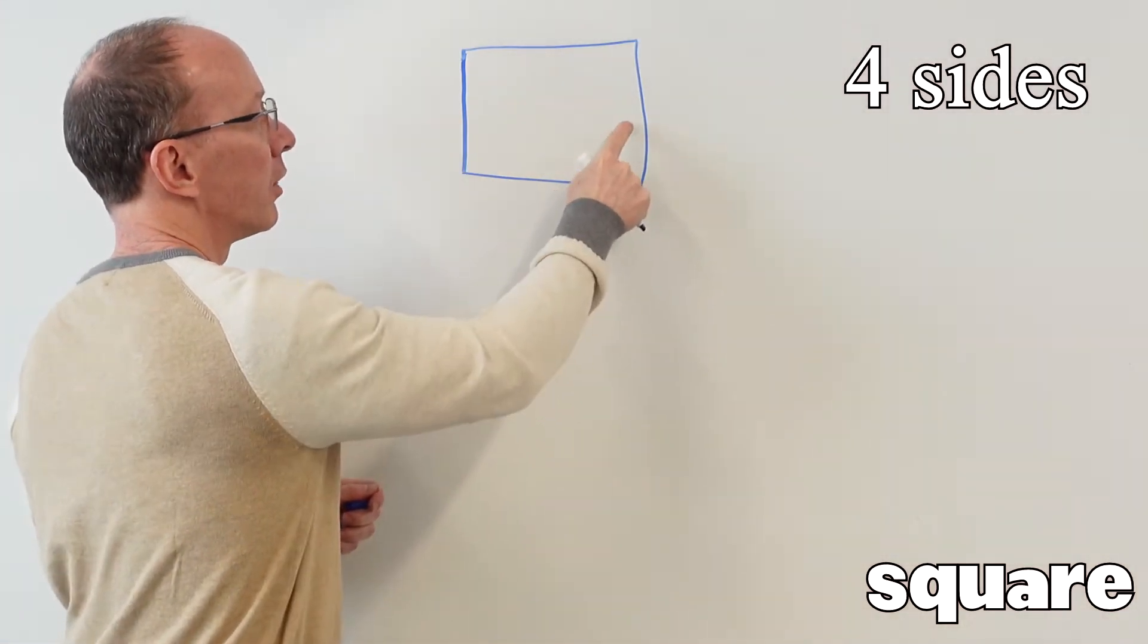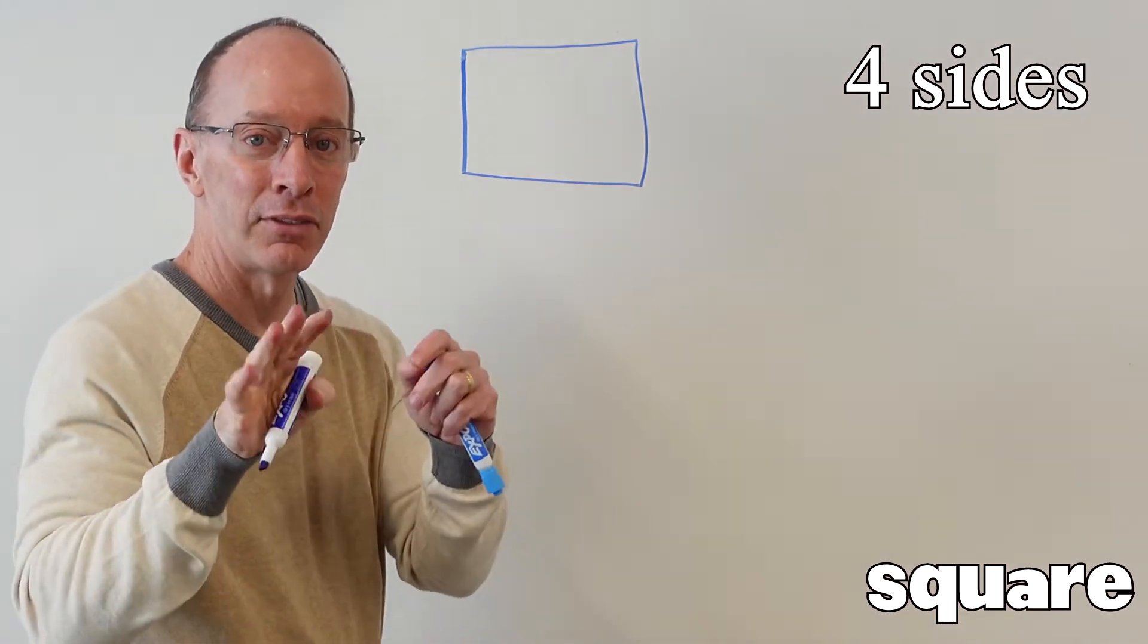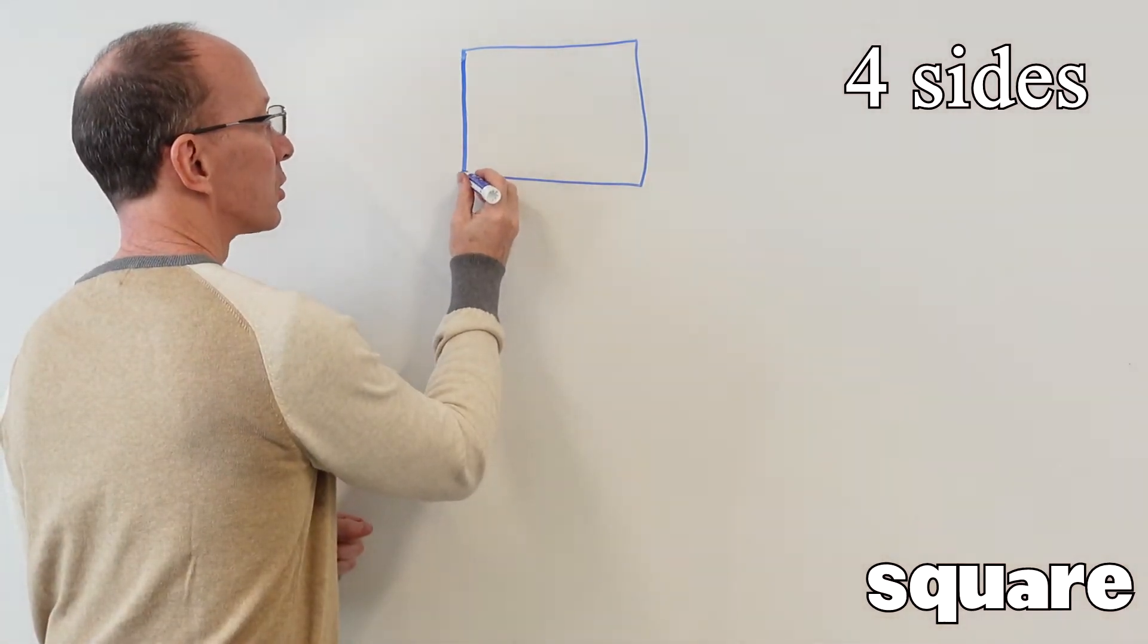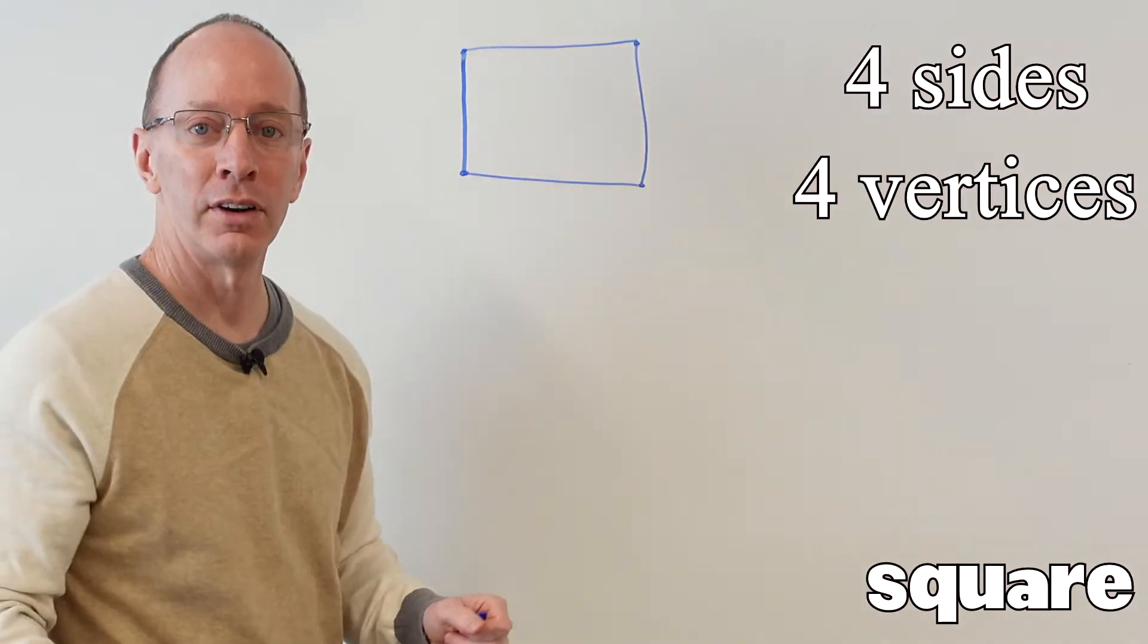We have one, two, three, four. And remember, a vertices is where two sides comes together, so a square has one, two, three, four vertices.